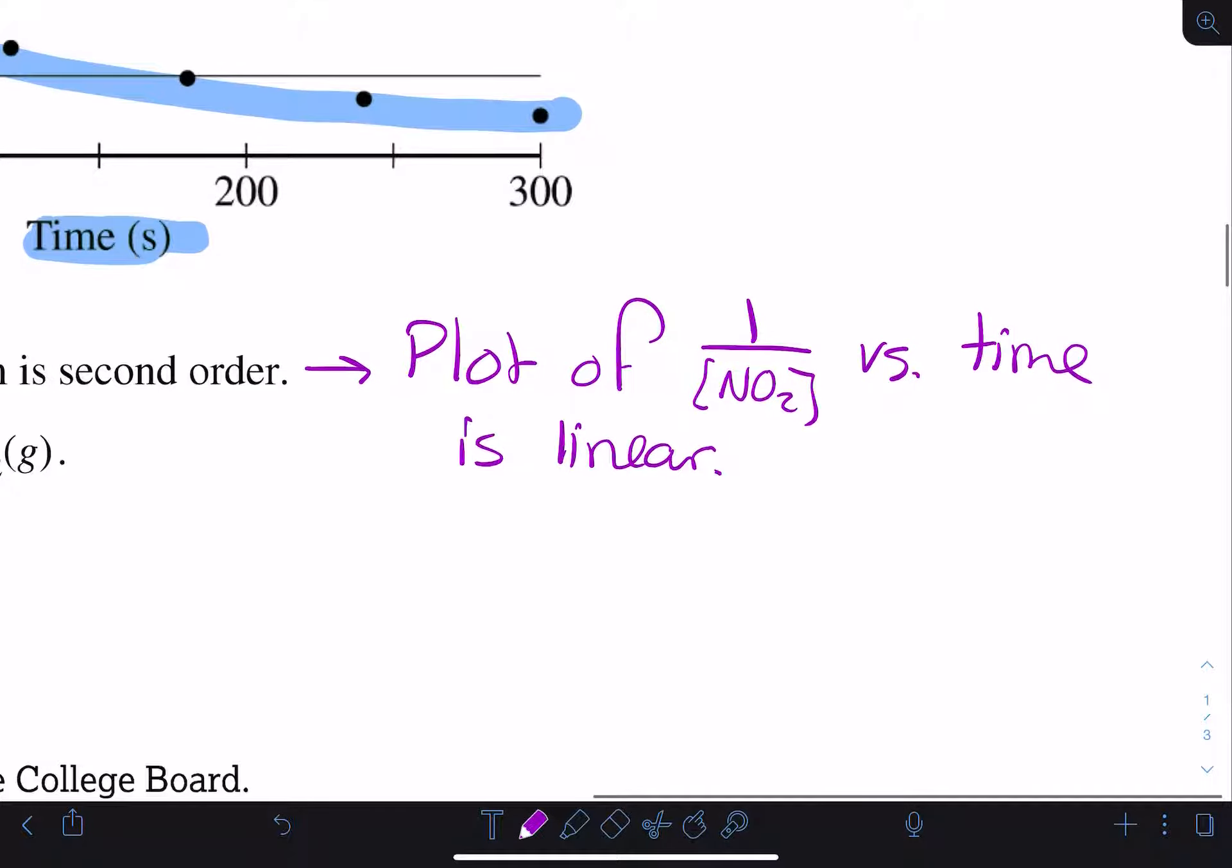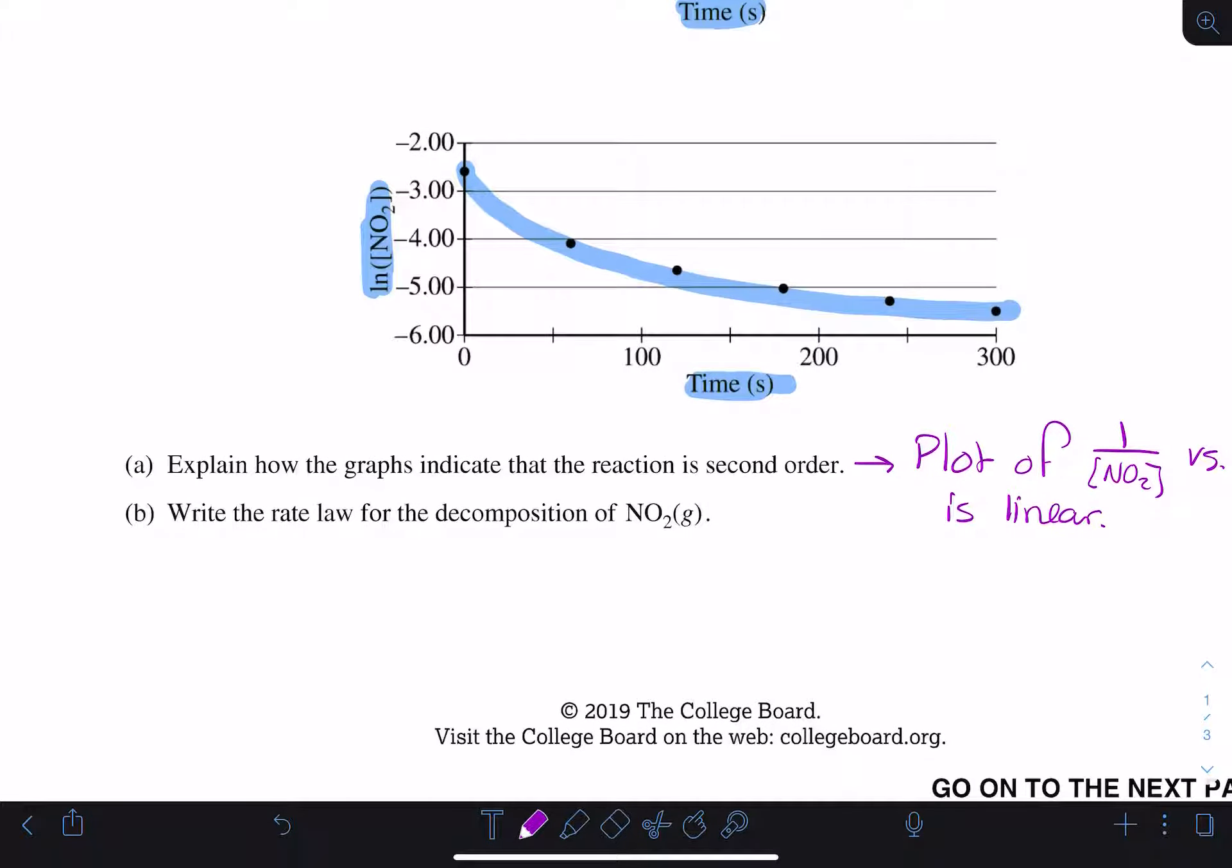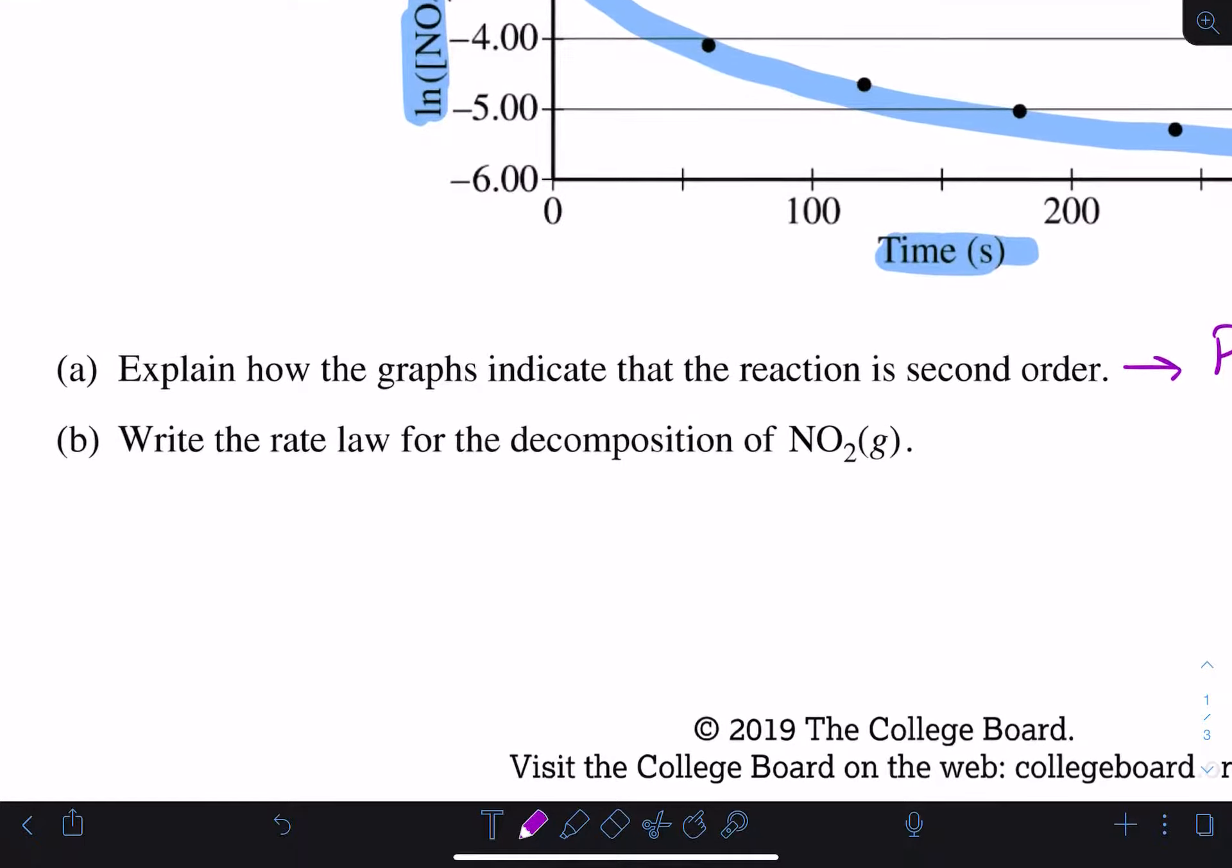We are then asked to write the rate law for the decomposition of NO2. We know that it is second order from the data that's been provided. So our rate will be equal to the rate constant times the concentration of NO2 squared.